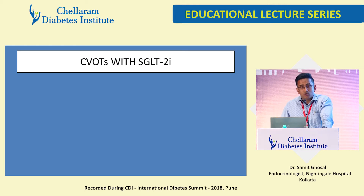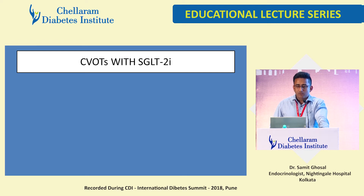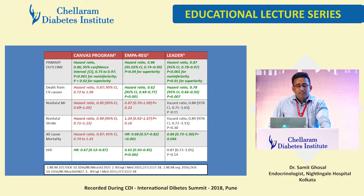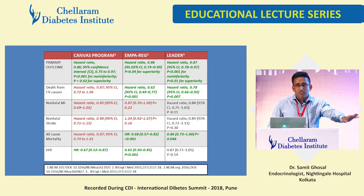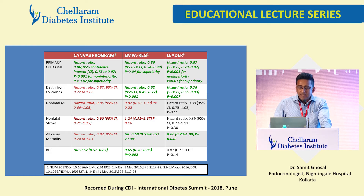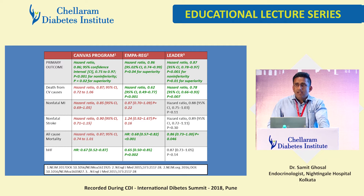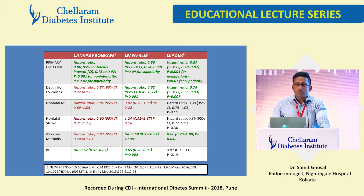With that backdrop, let's look at the cardiovascular outcome trials with SGLT2 inhibitors. In the CANVAS program, about 65% of patients had established cardiovascular disease and 35% did not — a mixed cohort with disproportionate distribution. In EMPA-REG, 99% of patients had established cardiovascular disease. In those patients, we found a significant benefit in the primary endpoints.